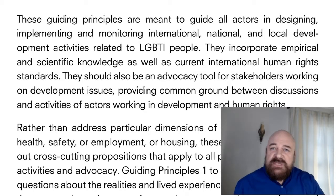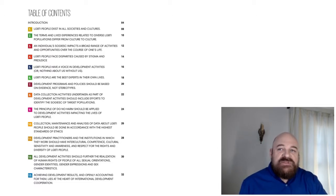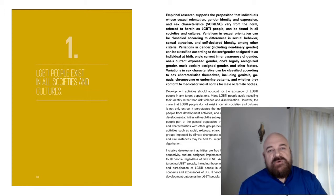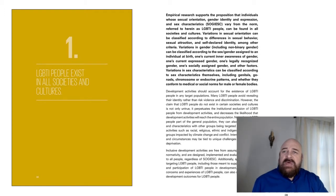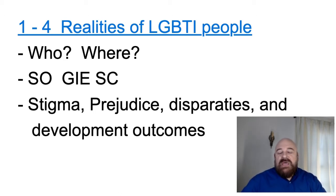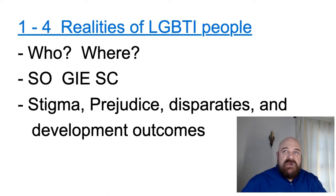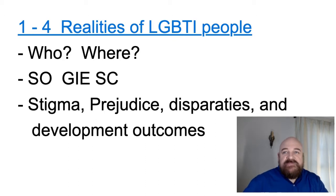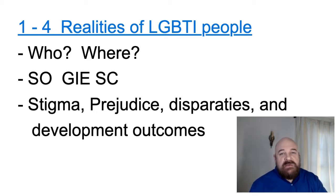In terms of what the principles say, if you look at the publication, there's a list of 13 principles — probably too small to see on the screen. For each principle, there is a short statement and then about a page of text explaining the principle itself. Principles one through four deal with the realities of LGBTI people: who are they, where are they, and how does SOGIESC — sexual orientation, gender identity and expression, and sex characteristics — relate to development? These realities should shape how development programs are designed, implemented, and monitored.